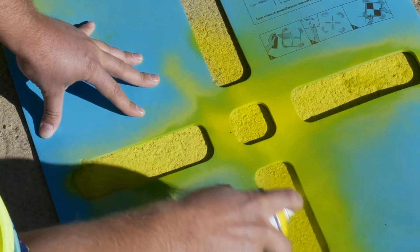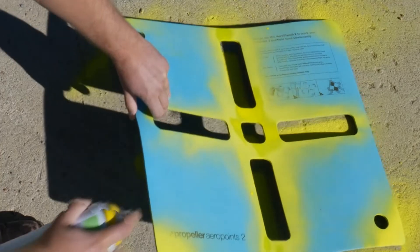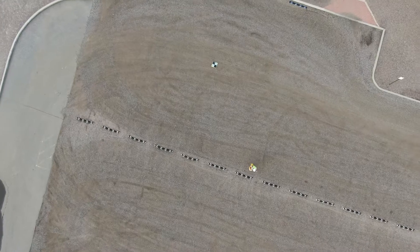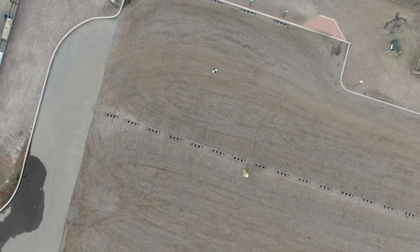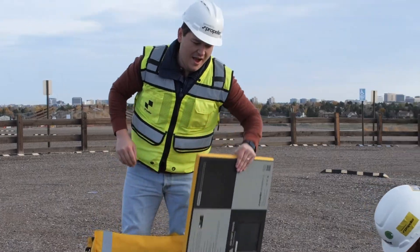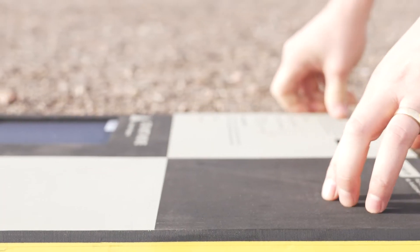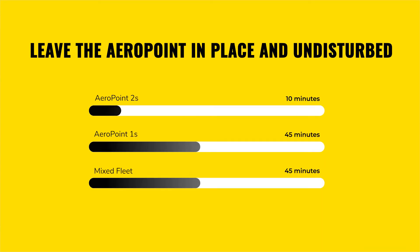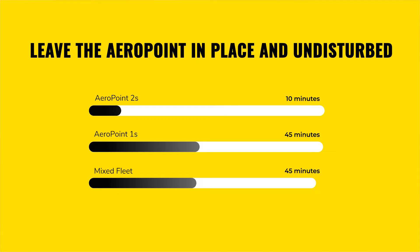Mark the ground with bright contrasting paint in the middle. You may also use another permanent marker that will be easily visible from the sky when flying your site. Place an arrow point precisely over the marked location and turn it on to begin collecting data. Leave the arrow point in place and undisturbed for at least 10 minutes if using arrow point 2s, or 45 minutes if using arrow point 1s or a mixed fleet comprised of both arrow point 1s and 2s.